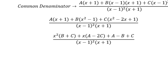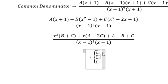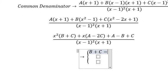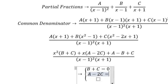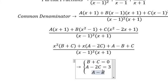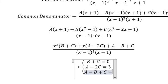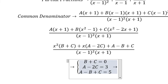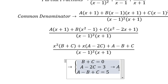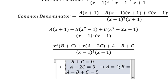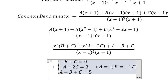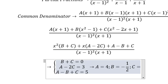Now we create the system of equations. B plus C equals 0. A minus 2C equals 3. A minus B plus C equals 5. And now we find the solution: A equals 4, B equals negative 1/2, C equals 1/2.